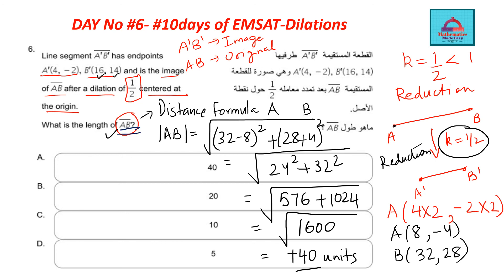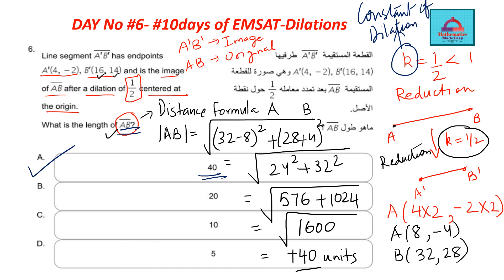So 40 units is the length of AB — that's your answer. Option A is the answer, as you can see from the choices. This was a question on dilation — specifically a reduction. You were given the constant of dilation K, and we used it to solve the problem. If K were greater than 1, it would be an expansion, and the coordinates would change accordingly.